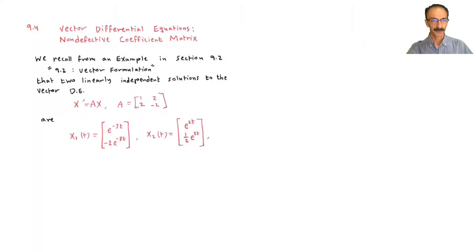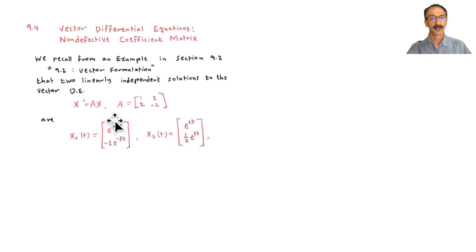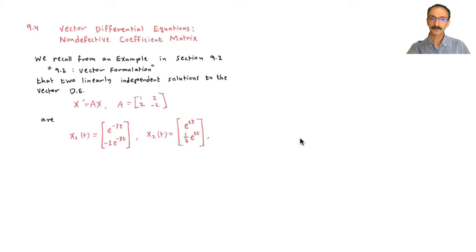If you remember from 9.2, the vector formulation gave us two linearly independent solutions to the vector differential equation — two lambdas, two v's. We wrote x1 and x2 as column vectors. Notice these two: if I pull e^(-3t) outside I get 1 and -2, and if I take e^(2t) out I get 1 and 1/2.